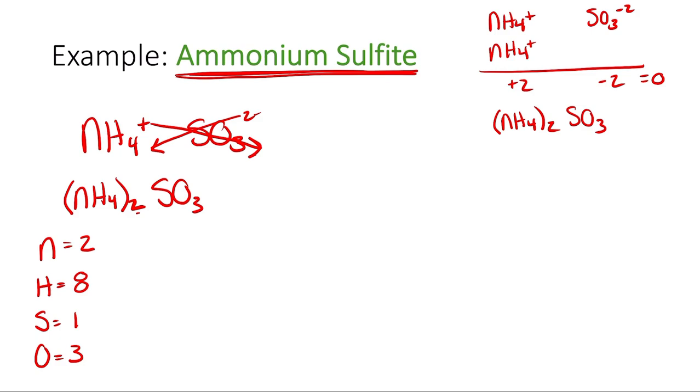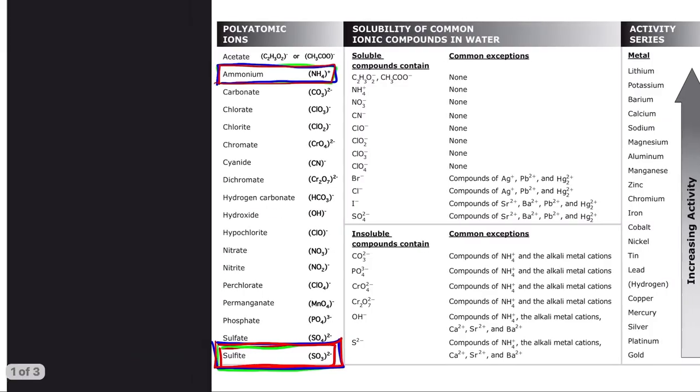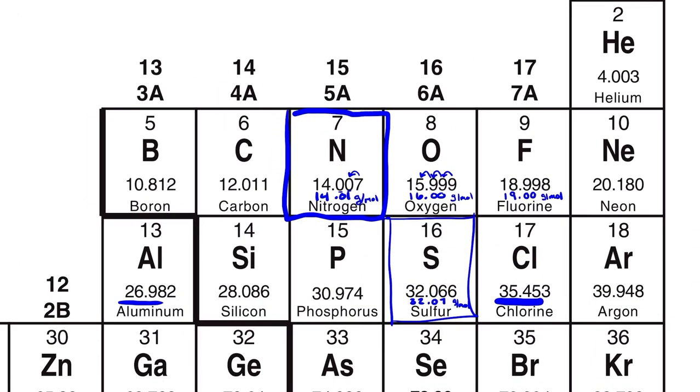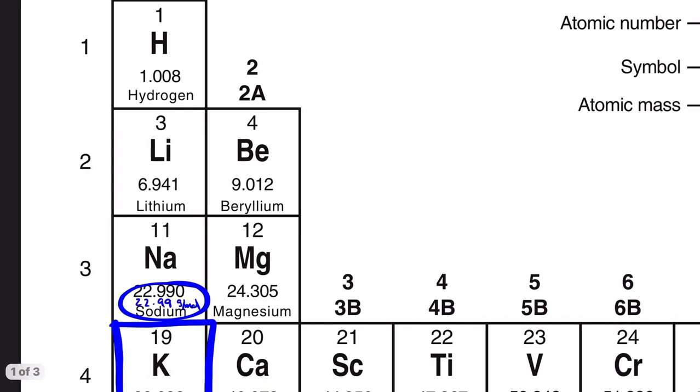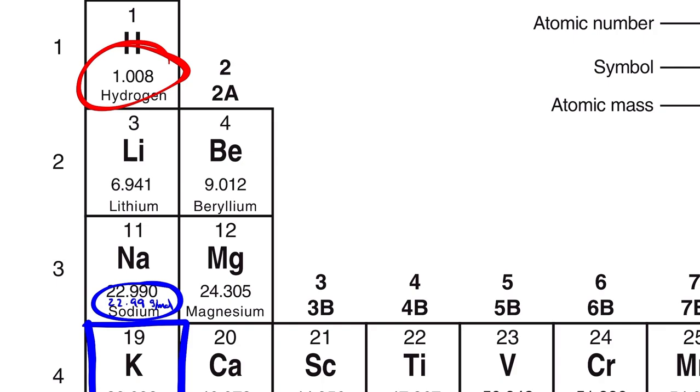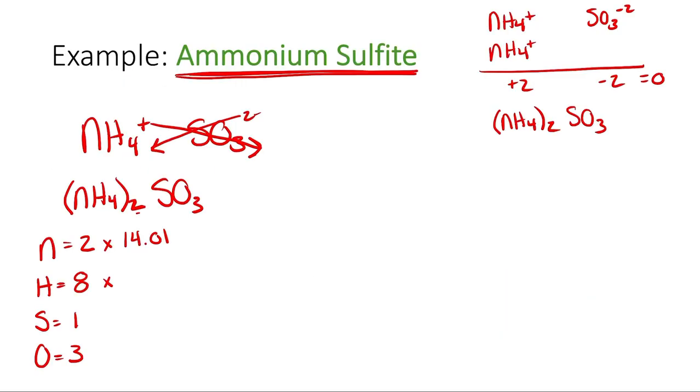The next step is to multiply these by the molar masses from the periodic table. Nitrogen is 14.01. Hydrogen, if we take a look all the way over here, is 1.01 after we round it to two decimal places.